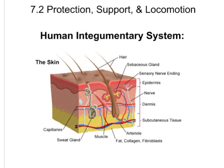Hello and welcome to section 7.2. We're going to talk about protection, support, and locomotion aspects of different human systems. We're going to start with the human integumentary system — a great big word, but it is referring to the skin. Here's a little diagram of the different layers of skin.